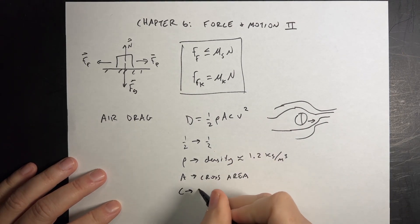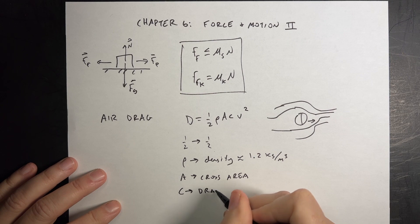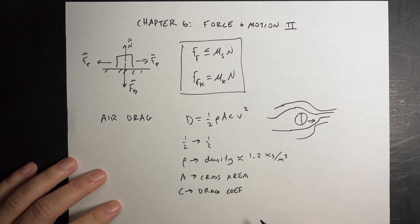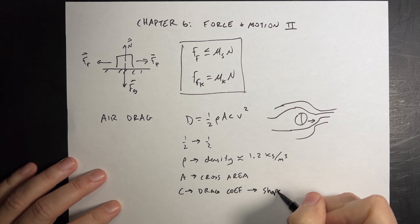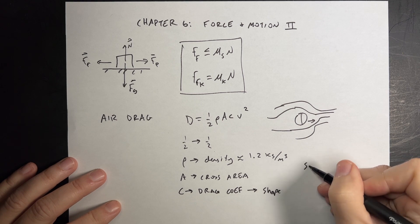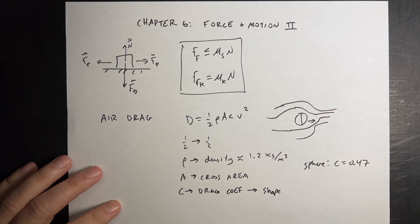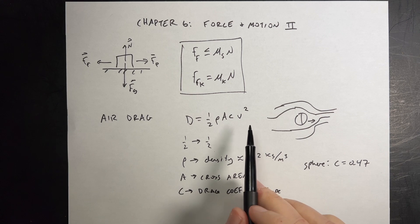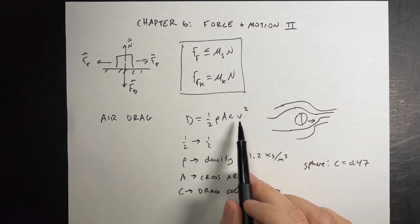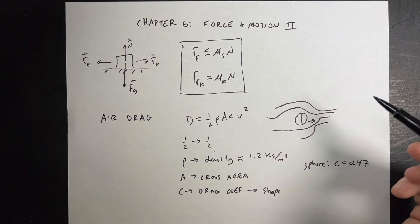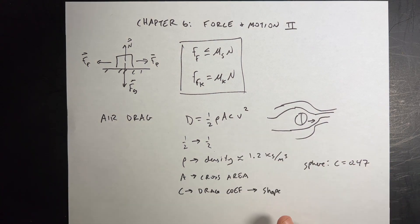C is a drag coefficient. It's a unitless quantity that depends on the shape. And so you'd have to look this up. So I think like a sphere, C equals 0.47. I just know that because I've used that a whole bunch of times. And then V is the velocity. It's actually the velocity relative to the air. So if there's a wind blowing this way and the ball's moving that way, then that would be that relative velocity to the air.